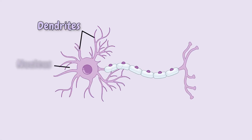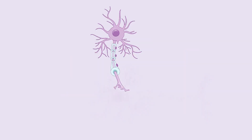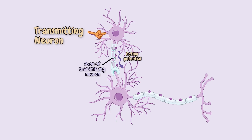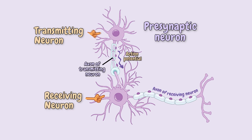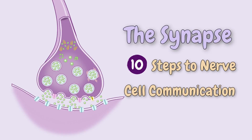As you know, the nerve cell has its dendrites, the nucleus, the axon, myelin sheath, and axon terminals. This interaction has two parts. The cell that sends a message is known as the transmitting neuron, or the presynaptic neuron, and the receiving neuron is known as the postsynaptic neuron. We'll go over everything in just 10 steps.